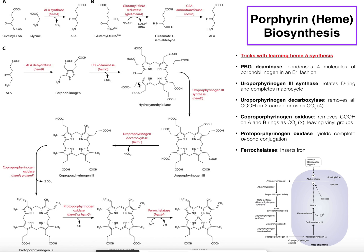The enzyme uroporphyrinogen III synthase converts hydroxymethyl bilane into uroporphyrinogen III. The carbon of the hydroxymethyl group on the A ring and the carbon of the D ring are condensed together, completing closure of the macrocycle, and the OH leaves. Also notice that if you look around the ring, the arm pattern reads two-carbon, three-carbon, two-carbon, three-carbon, two-carbon, three-carbon — and then flips to three-carbon, two-carbon on the D ring.